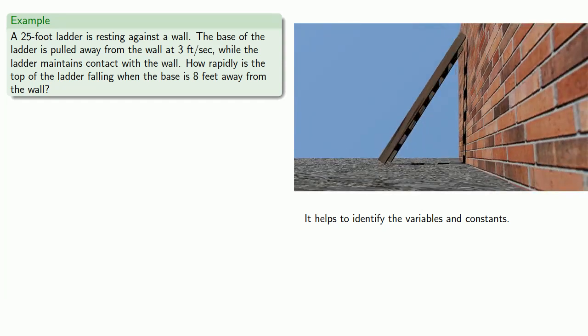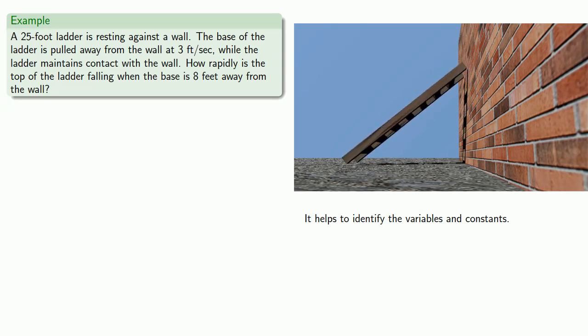So it helps to identify the variables and constants. So let's let our ladder slide a little bit. So we see that the distance to the top of the ladder and the distance to the base of the ladder from the wall are variable quantities.